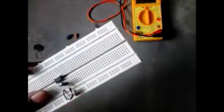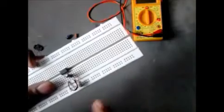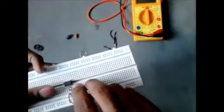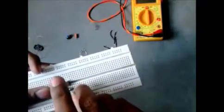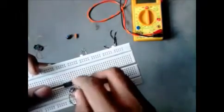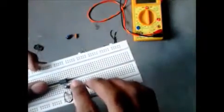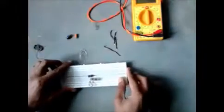One lead of microphone is connected to negative of capacitor and another wire will be connected to the ground. Ground means 4th pin. So it's done.